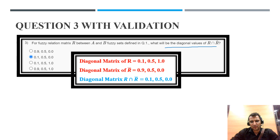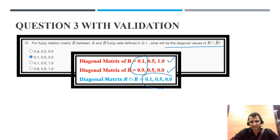Question 3: what will be the diagonal values of R intersection R̄? This is R and this is R complement. Because it is intersection, we take the minimum value. Minimum of 0.1 and 0.9 is 0.1; minimum of 0.5 and 0.5 is 0.5; minimum of 1 and 0 is 0. Therefore the diagonal values are 0.1, 0.5, and 0 — option B is the correct one.